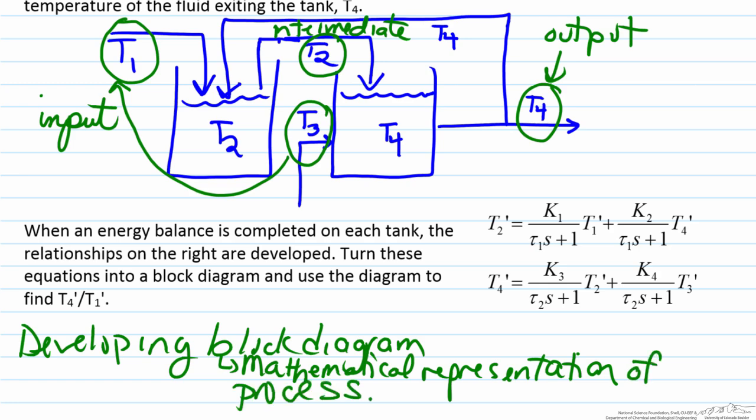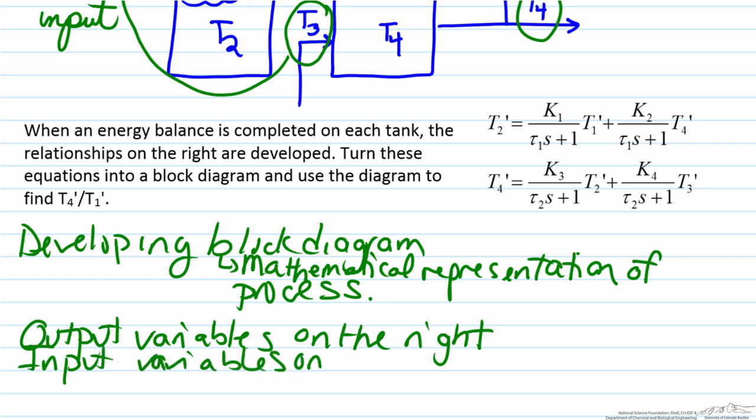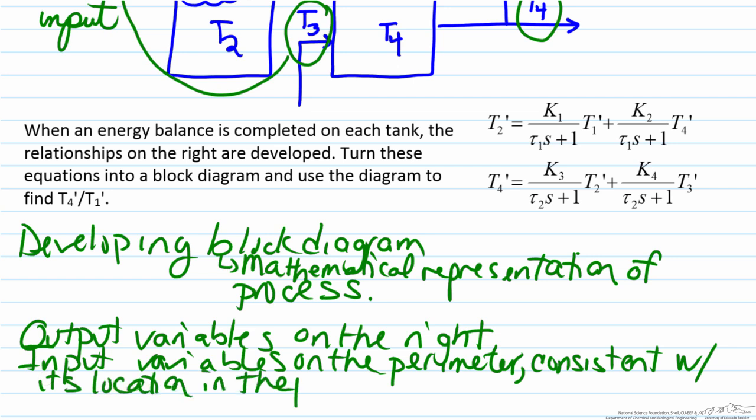So because of that generally what you try to do is have output variables on the right and input variables on the perimeter. You would want the perimeter consistent with its location in the process. So for example if the first thing that you see is the change of a particular input variable going from left to right then that should probably be located at the left hand side.